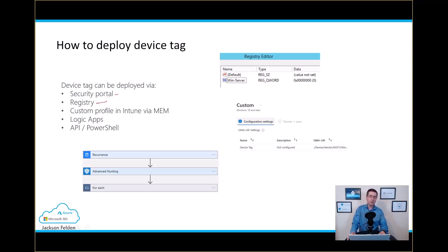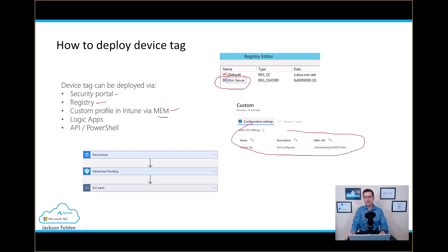The second option is to add a registry key. I'm adding 'win-server' to tag my Windows Servers. The next option is using Intune via Microsoft Endpoint Manager, where there is a specific command you need to use to push the tag you want.